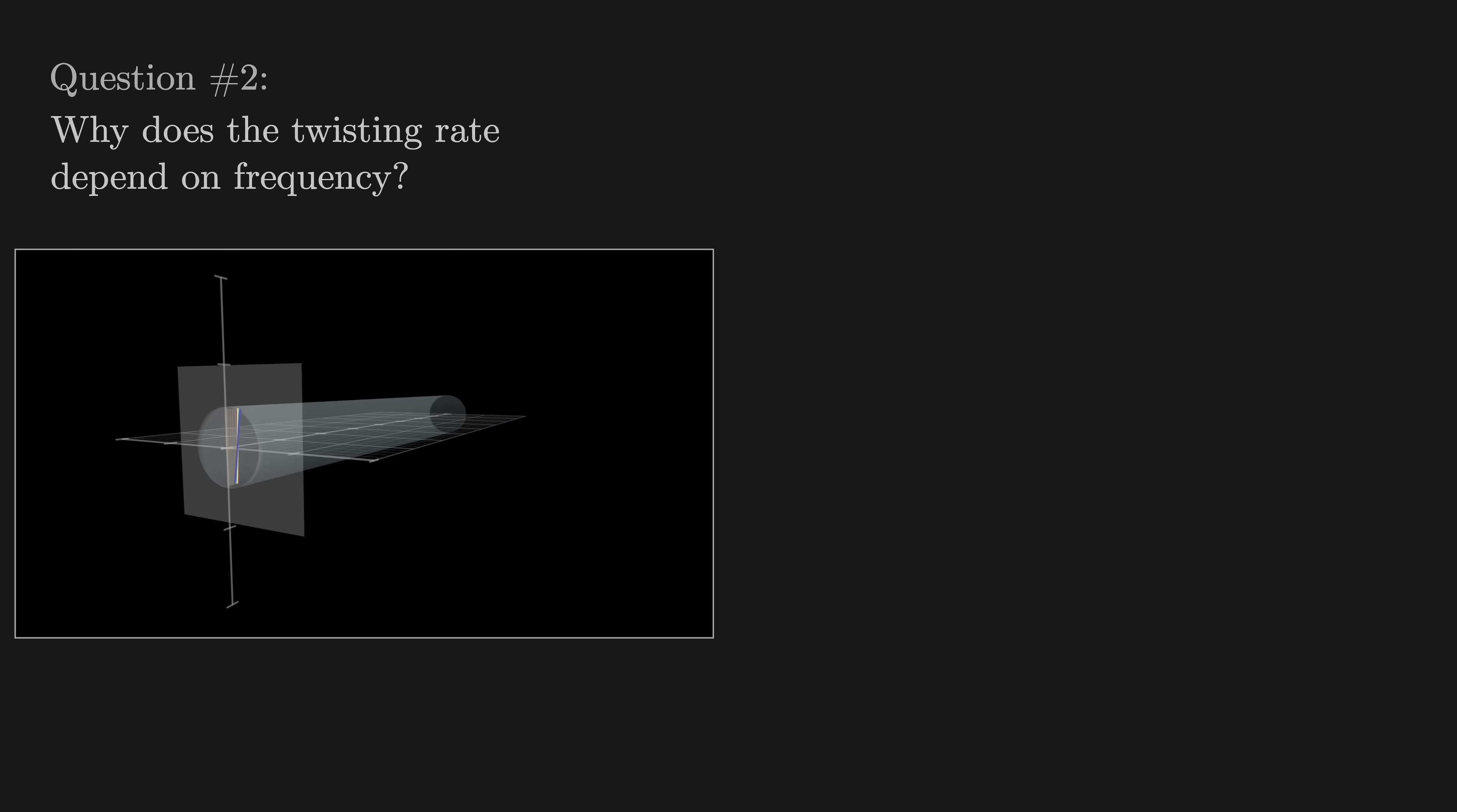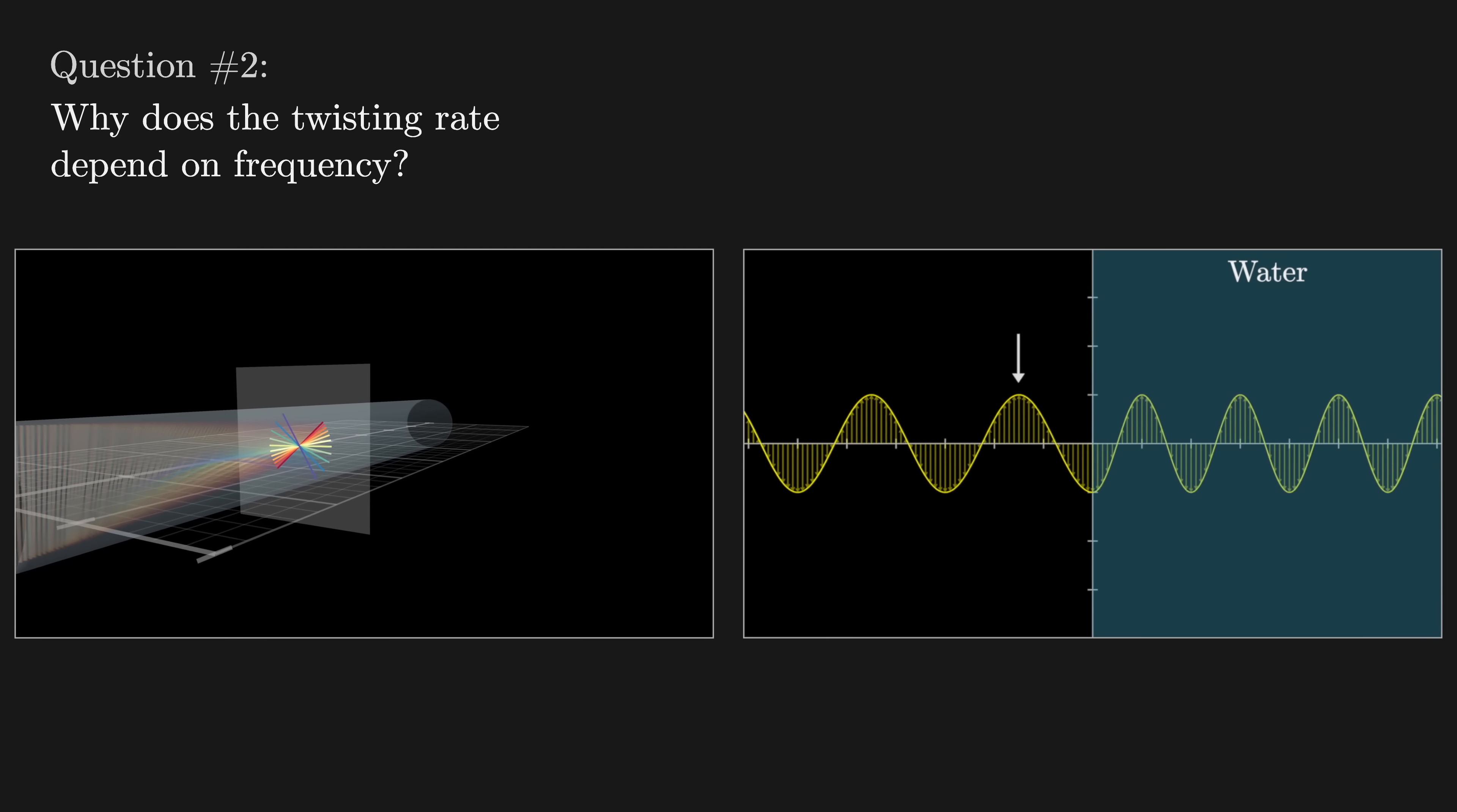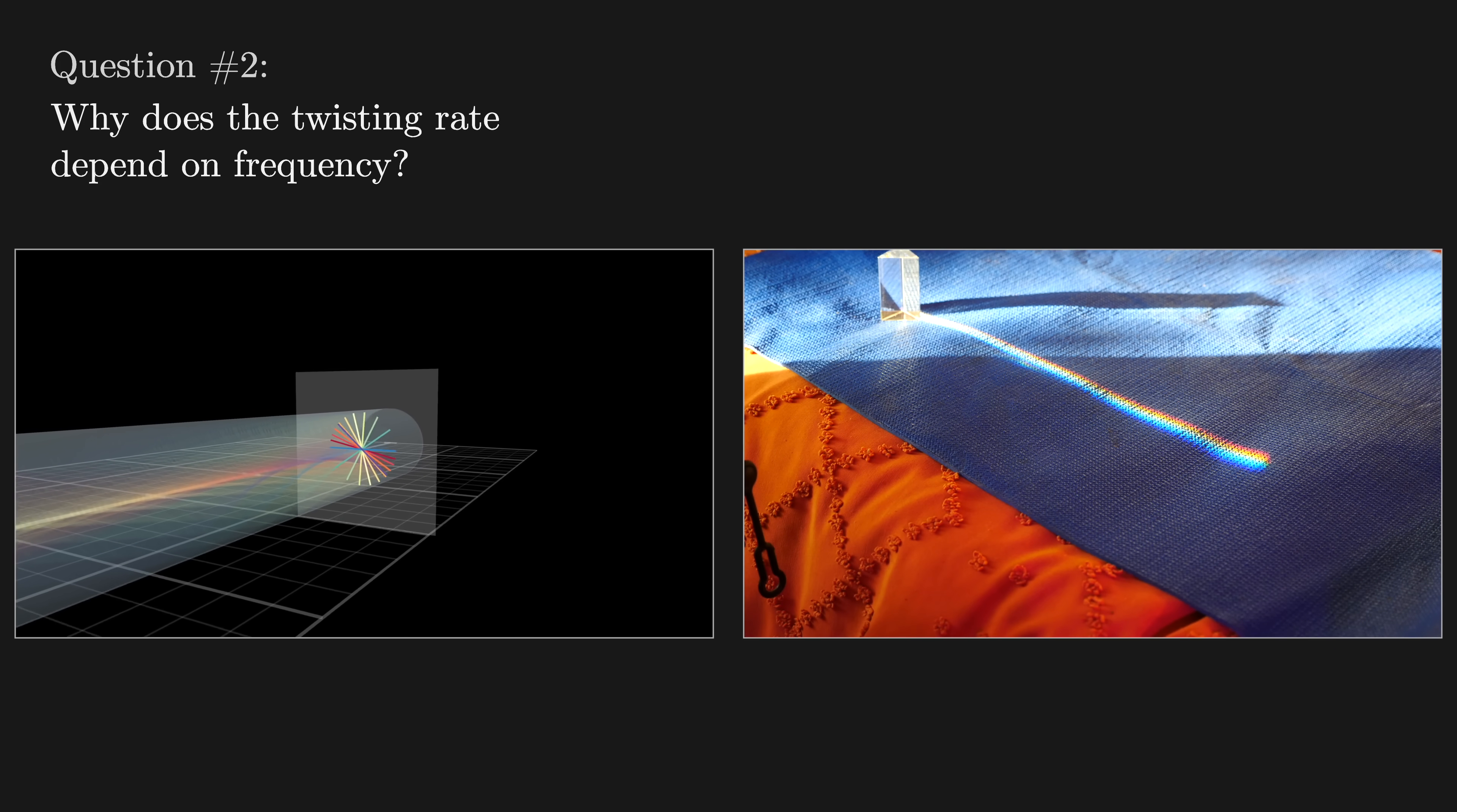The second question requires understanding why light appears to slow down when it passes through a material. A sufficiently mathematical understanding for where that slow down comes from ultimately explains the color separation here.